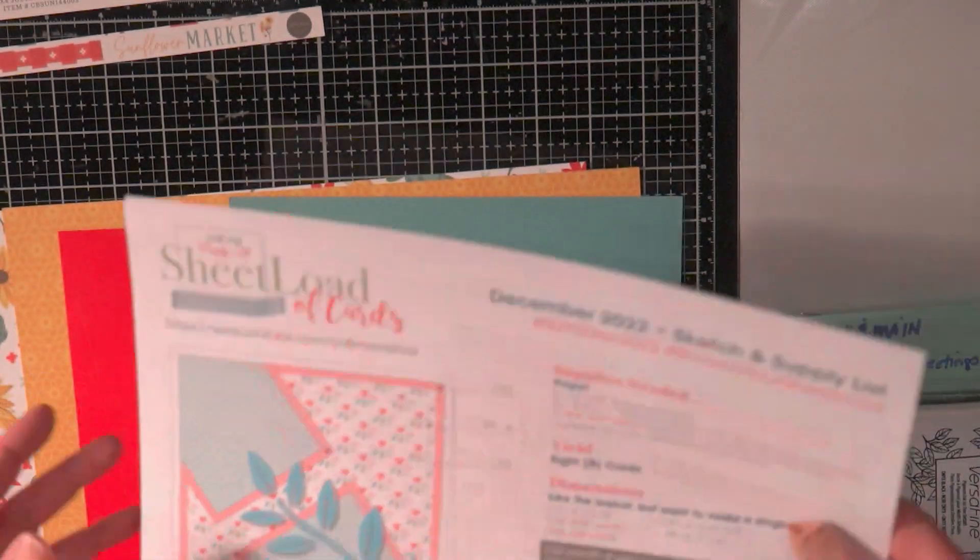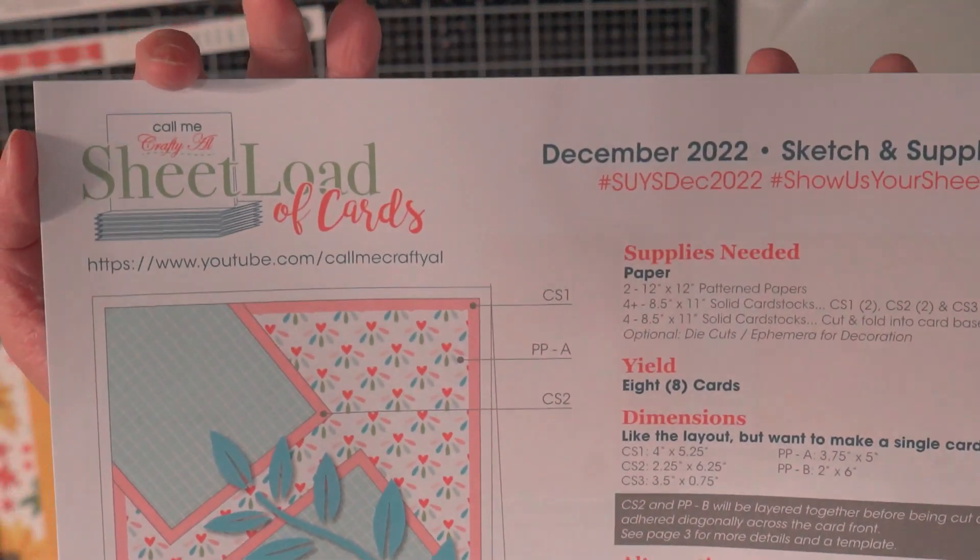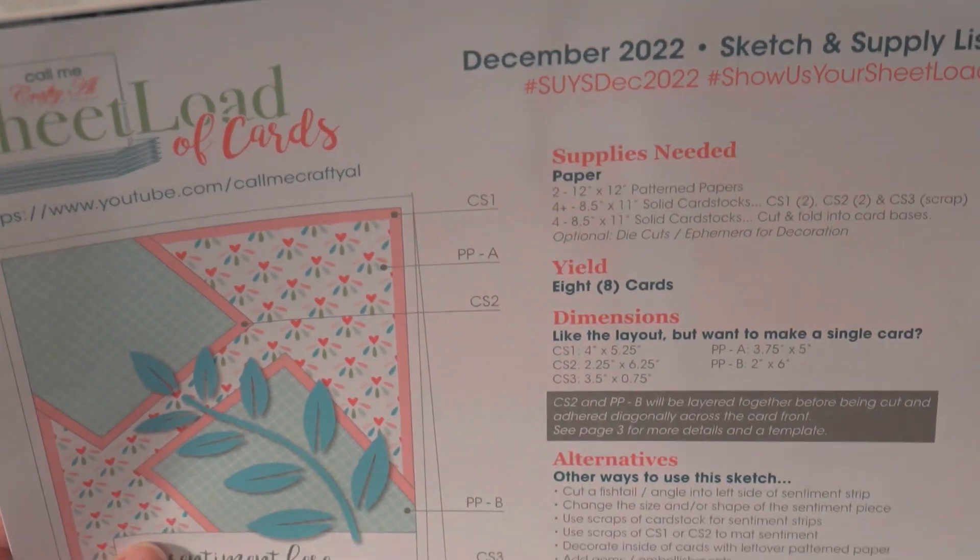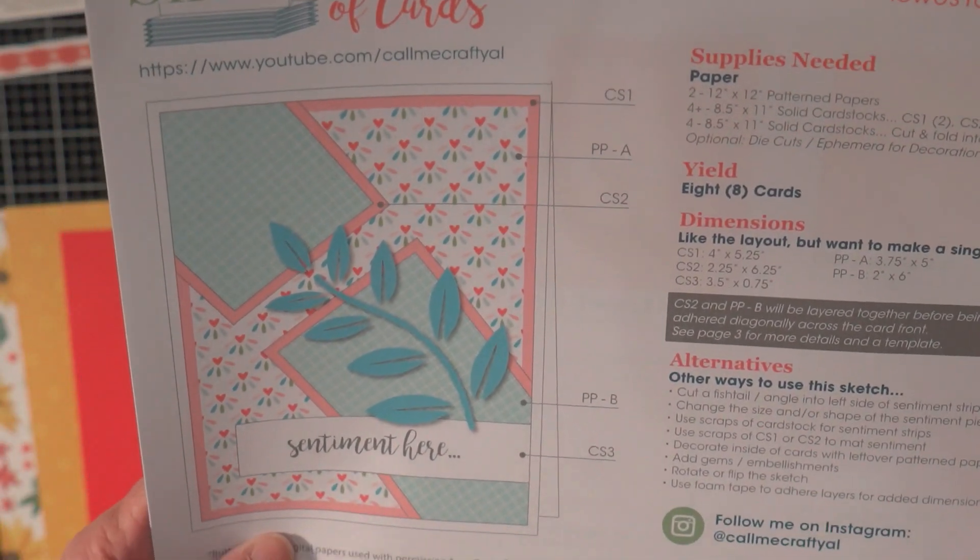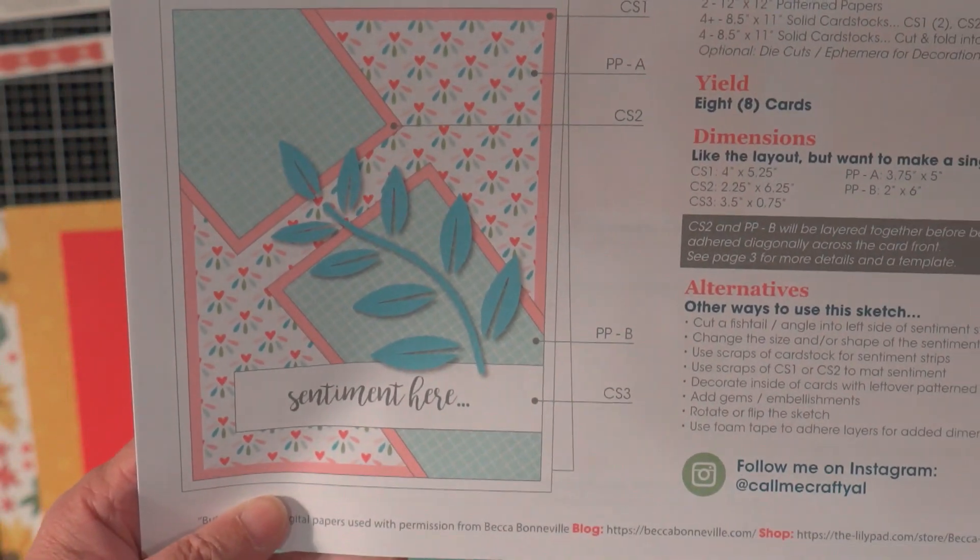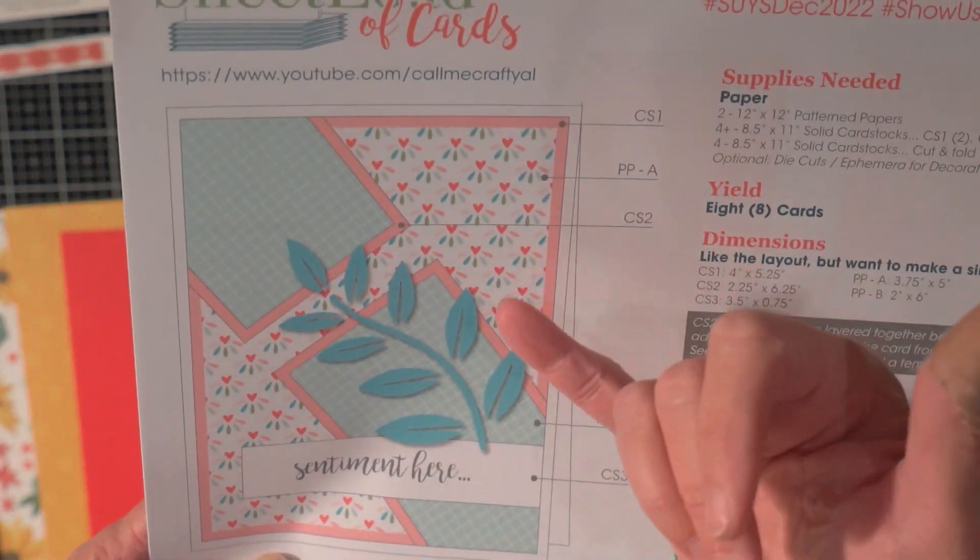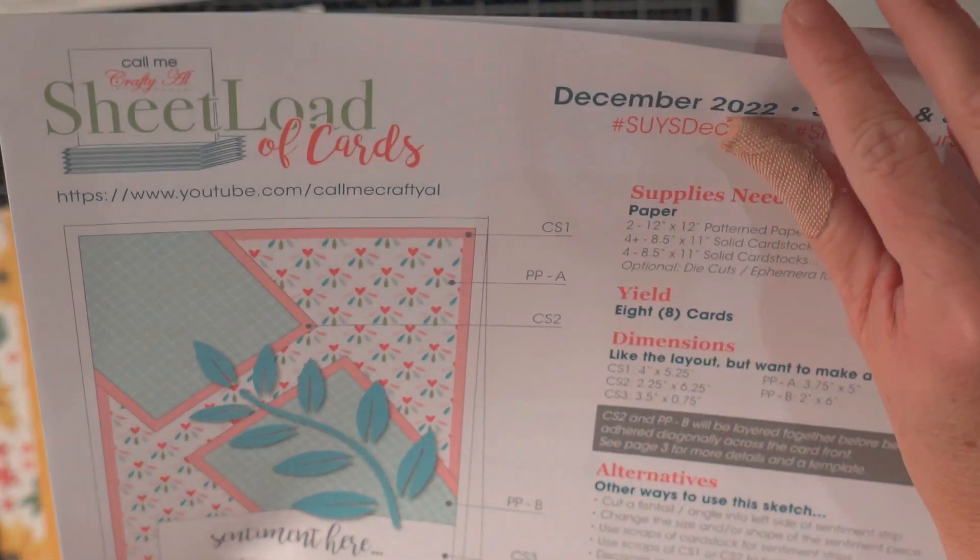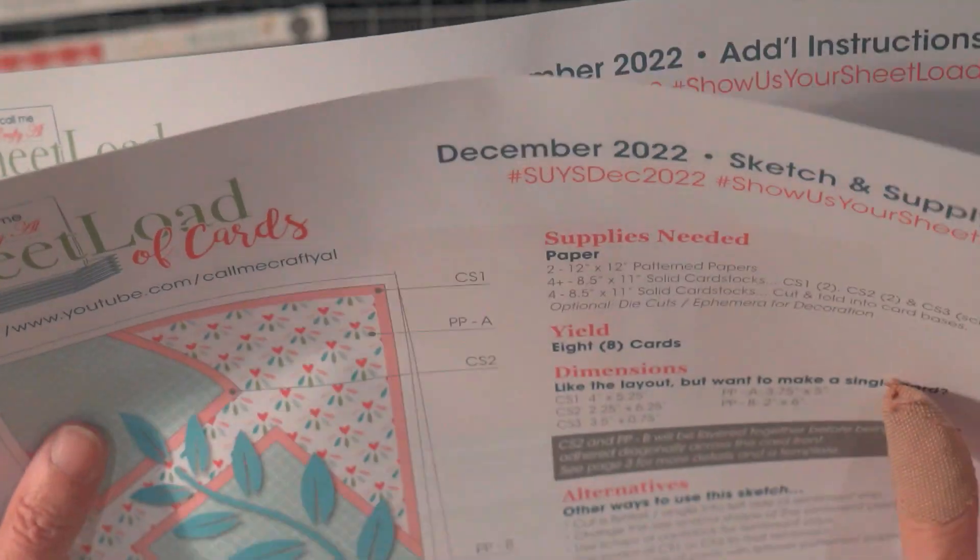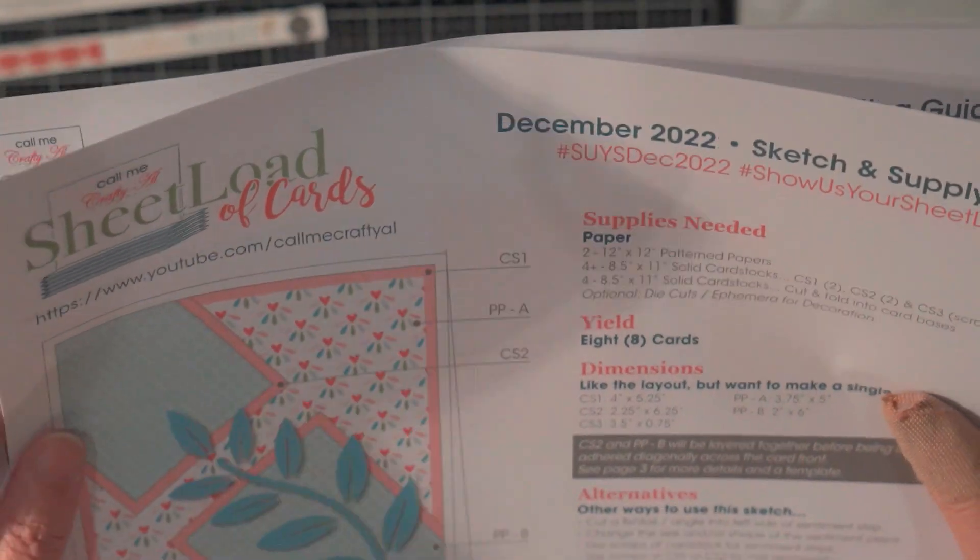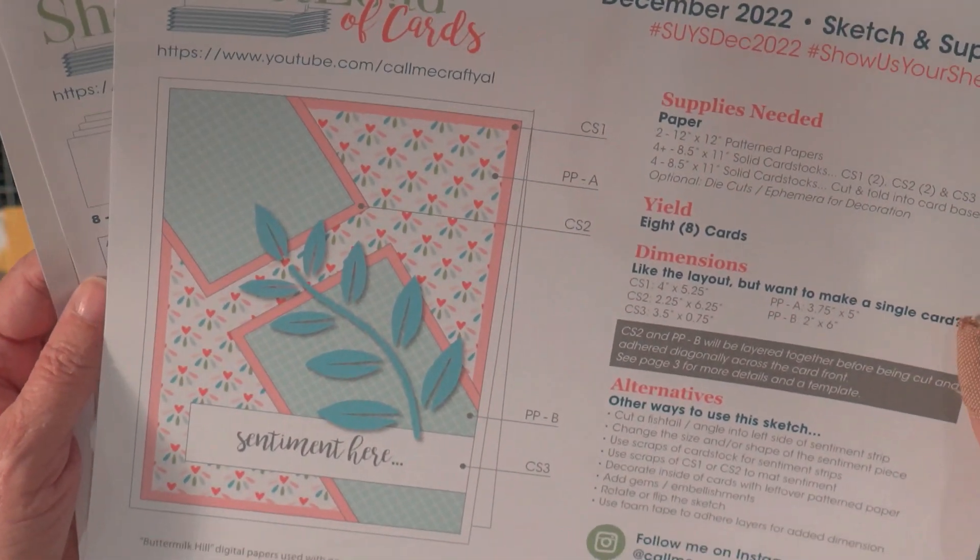And it is time for Sheet Load of Cards and for December Alicia has put together a really unique pattern here on the front of the card. I can't wait to see how this goes together. So as always she gives you the supplies that you need and then on the second of the month she'll show how she made her cards.